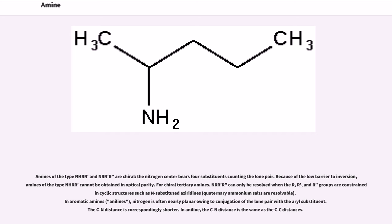Because of the low barrier to inversion, amines of the type NHRR' cannot be obtained in optical purity. For chiral tertiary amines, NRR'R'' can only be resolved when the R, R', and R'' groups are constrained in cyclic structures such as N-substituted aziridines, quaternary ammonium salts are resolvable.